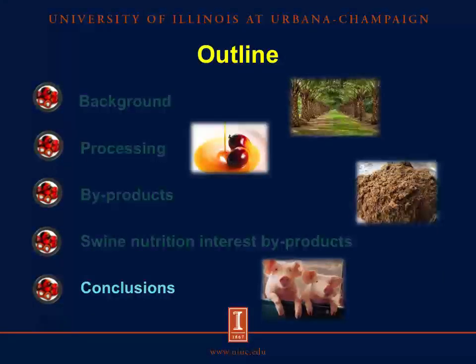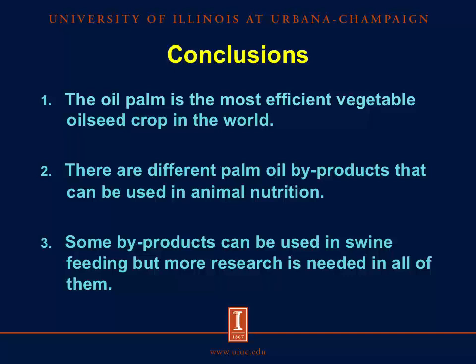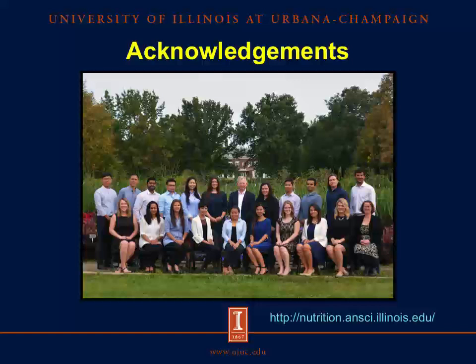In conclusion, the oil palm is the most efficient vegetable oil seed crop in the world. There are different palm oil byproducts that can be used in animal nutrition, and some byproducts can be used in swine feeding, but more research is needed in all of them. Thank you all for your attention and to all my classmates for their support. For more information about this topic, visit our website at nutrition.ansi.illinois.edu.